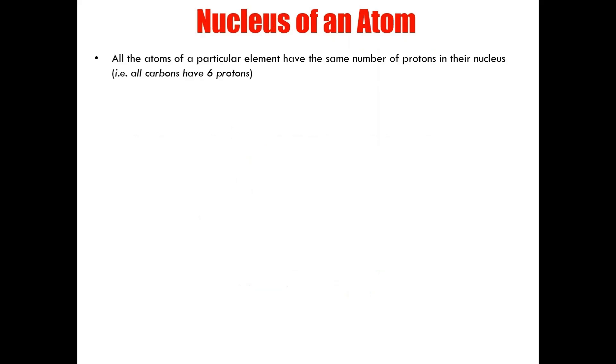All the atoms of a particular element have the same number of protons in their nucleus. So for example, every carbon atom has exactly six protons. The number of protons found within the nucleus of any given element is called the atomic number, symbolized by the letter Z. An atomic number serves as a reference for each element.